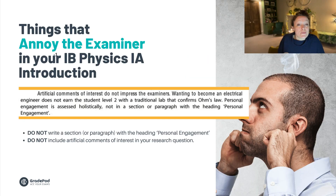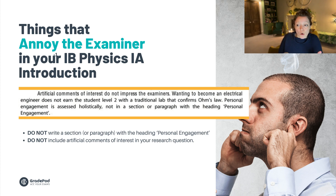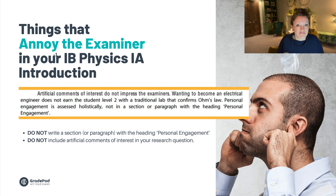I promised I'd tell you some things that annoy physics examiners. Reading from their report: 'Artificial comments of interest do not impress the examiners. Wanting to become an electrical engineer does not earn the student level two with a traditional lab that confirms Ohm's law. Personal engagement is assessed holistically, not in a section or paragraph with the heading personal engagement.' So don't say you want to become an electrical engineer and then do a really simple investigation on Ohm's law. And please do not write the title 'personal engagement' and explain why you want to do the investigation. That annoys them, so let's steer clear of that.